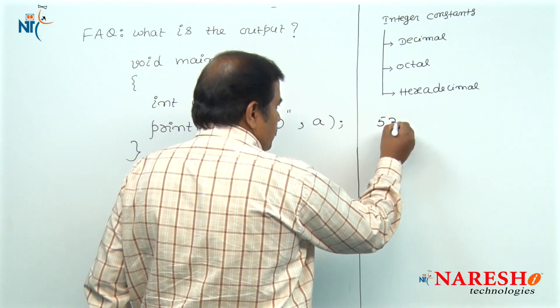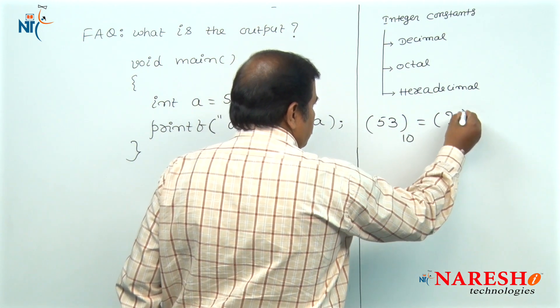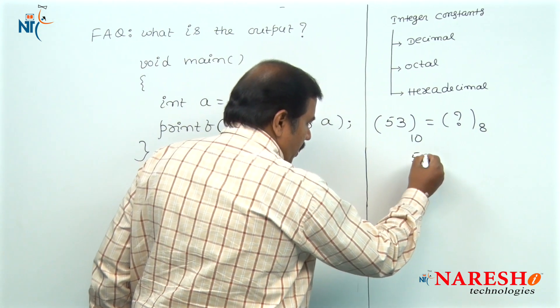How to convert a decimal integer value into its equivalent octal integer constant? This method should be followed.